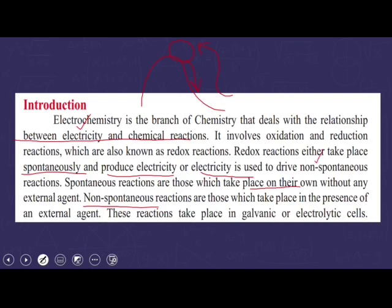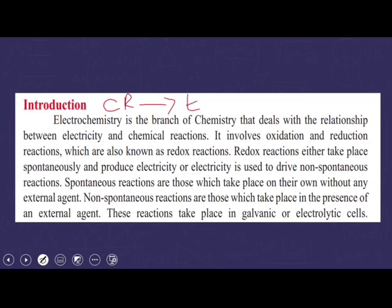So we have two types of reactions: one in which when we mix certain chemicals and a chemical reaction occurs, it will produce electricity. These types of reactions are spontaneous chemical reactions, and we call these types of cells galvanic cells. Cells in which a chemical reaction produces electricity — we call that a galvanic cell.